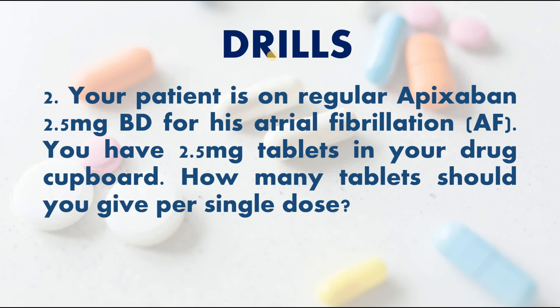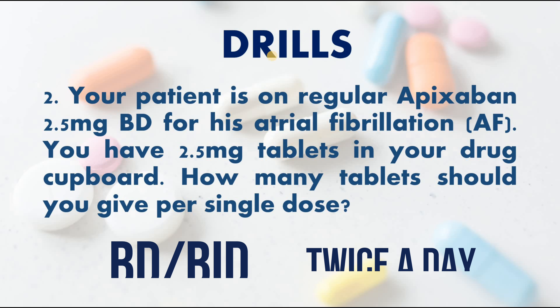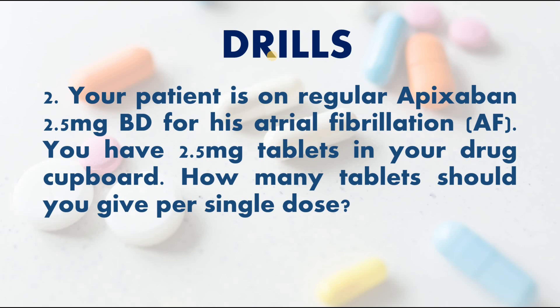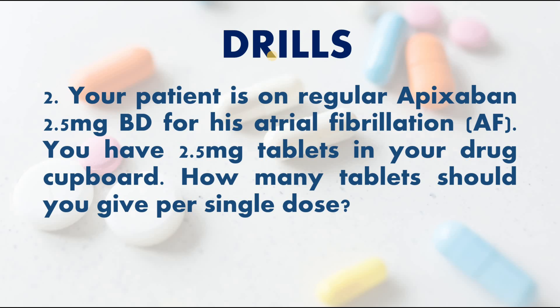Number two: your patient is on regular apixaban 2.5 milligrams BD for atrial fibrillation. You have 2.5 milligram tablets in your drug cupboard. How many tablets should you give per single dose? Apixaban is a blood thinner, and BD means twice a day. Using the formula, desired dose divided by stock: 2.5 milligrams divided by 2.5 milligrams equals 1 tablet.